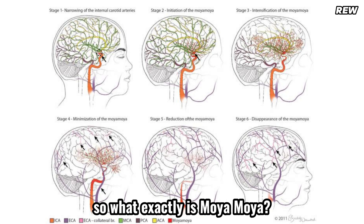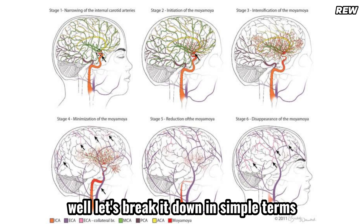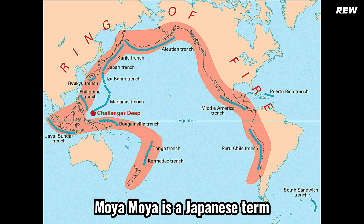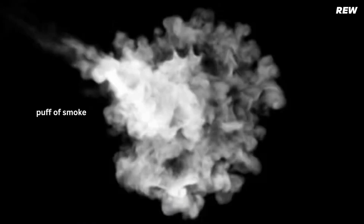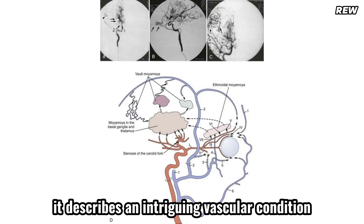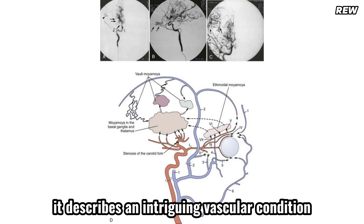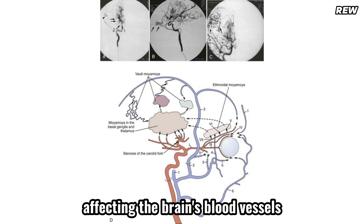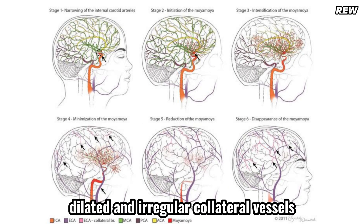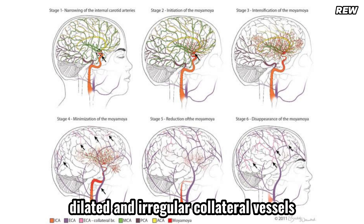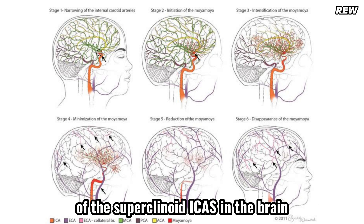So what exactly is Moya Moya? Let's break it down in simple terms. Moya Moya is a Japanese term that literally translates to 'puff of smoke.' It describes an intriguing vascular condition affecting the brain's blood vessels — a network of abnormal, dilated, and irregular collateral vessels that form secondary to progressive occlusion of the supraclinoid ICAs in the brain.